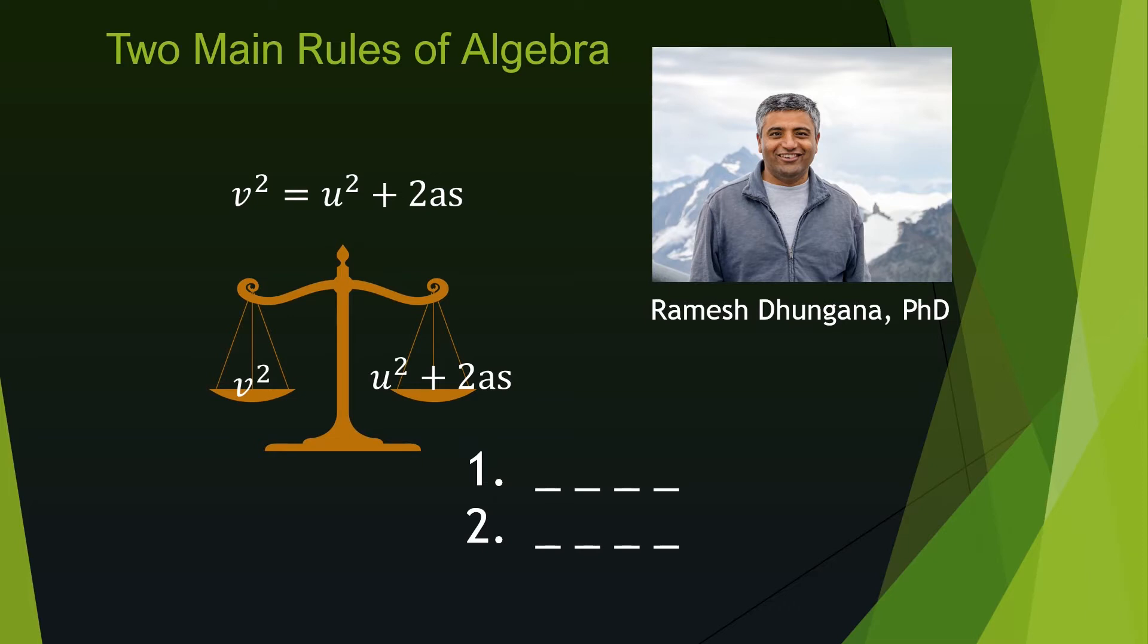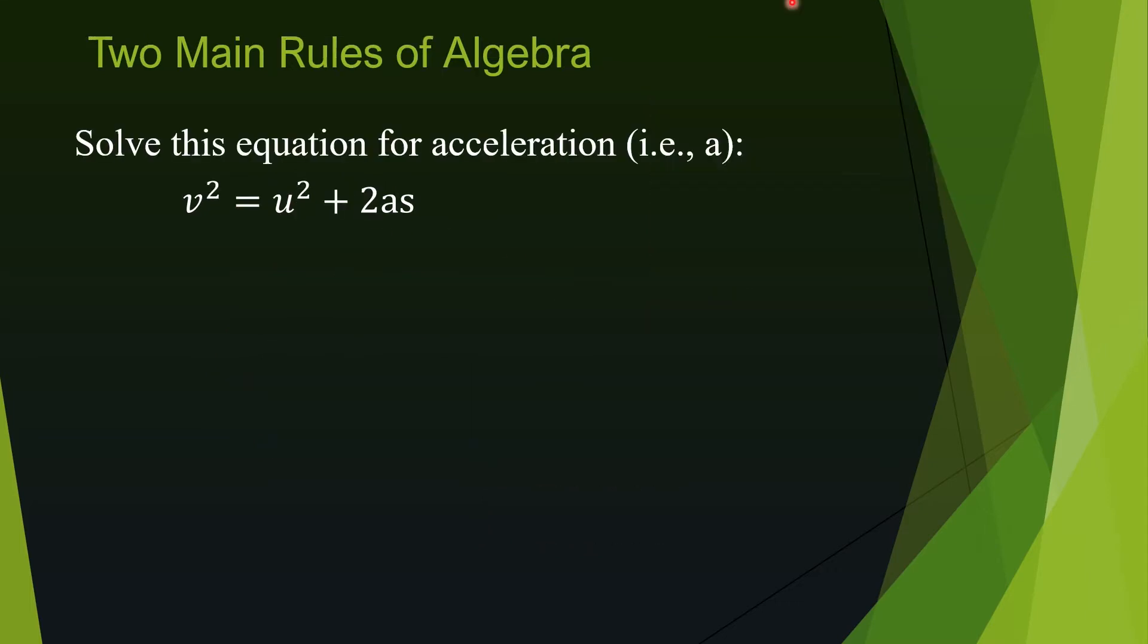Solving any equation means isolating the object or letter of interest on one side of the equation without losing balance between the sides, indicated by the equal sign. The process is a lot easier when we remember two rules. I'll talk about these two rules by using an example.